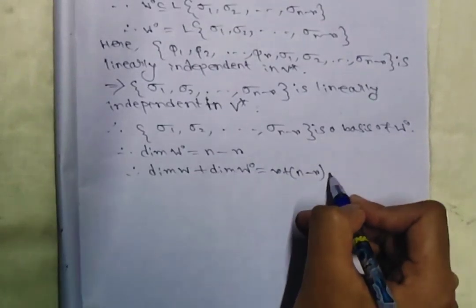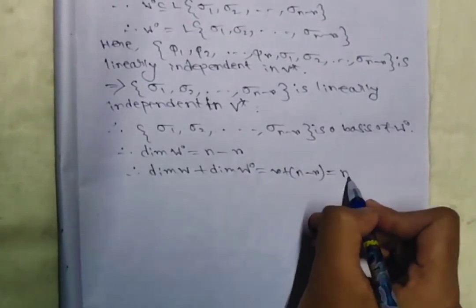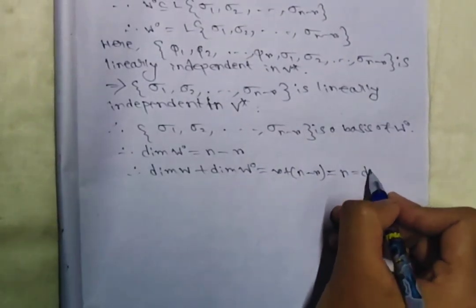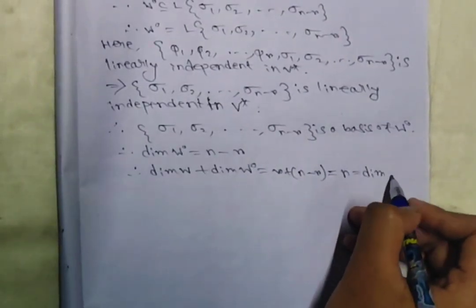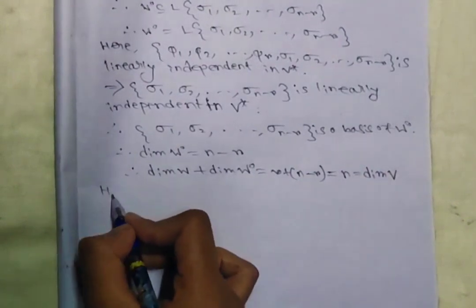This equals n, which is equal to dimension of V. Therefore dimension of W plus dimension of W naught equals r plus (n minus r) equals n equals dimension of V, which completes the proof.